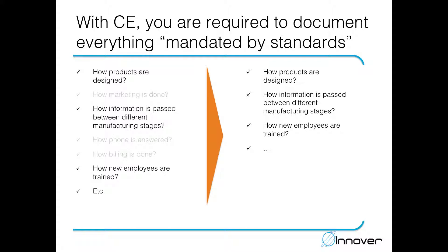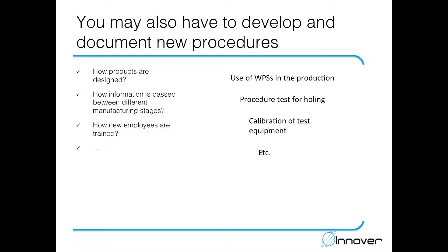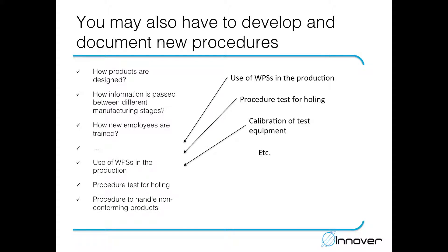However, it's not sufficient to just document the tasks mandated by the standard that you're already performing. There are some new requirements that must also be taken into account. For example, the standards require the use of welding procedure specifications, procedure tests for welding, and calibration of test equipment. These are things that most companies, in our experience, haven't paid much attention to, but in the CE marking world they must be included in the manufacturing process. So when developing your FPC system, you must incorporate these new elements and develop procedures and documentation for them.